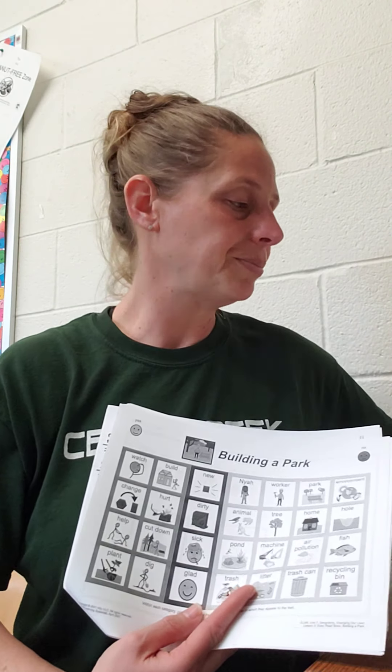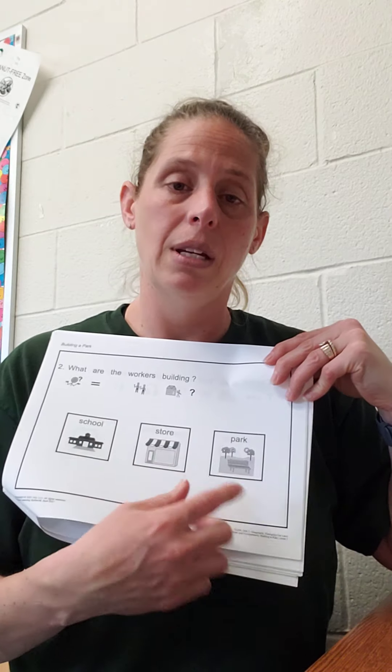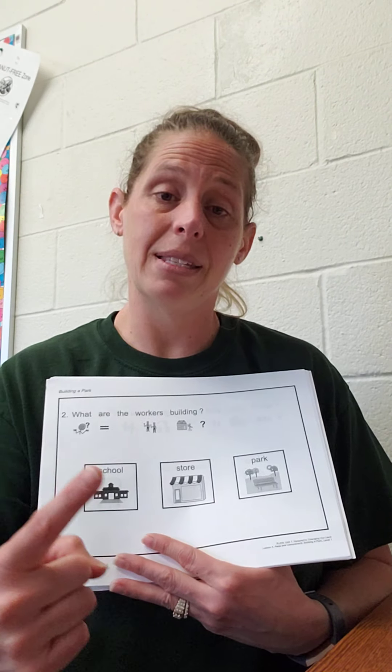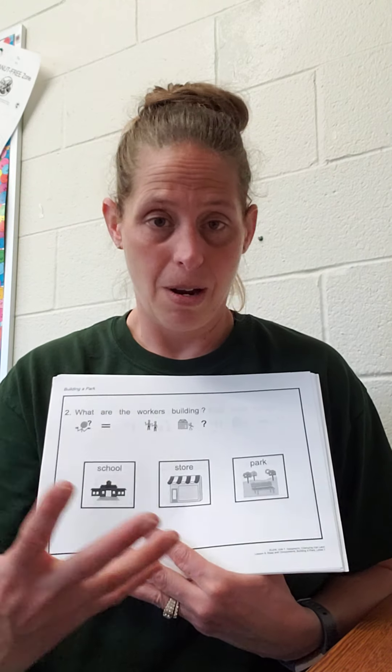The next thing we have are five comprehension questions. Remember you can cover up one of the choices so they're only having to choose between two. If your child can't choose between two, that's okay also — cover up the two that are not the correct choice so it's like they can't make a mistake. They're going to only choose that one picture. Remember to get excited, tell them great job, good choice, because we are still encouraging them to do their work.